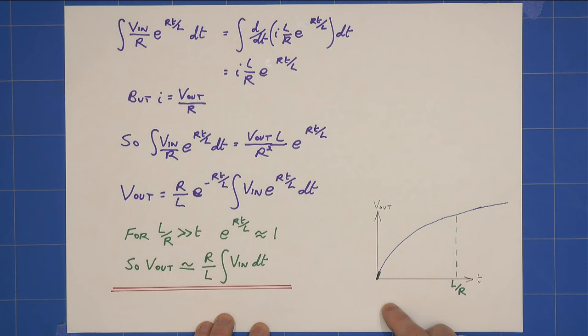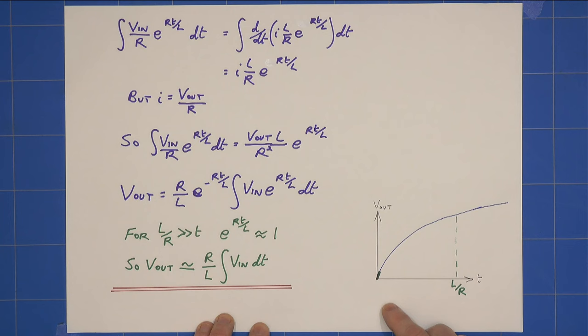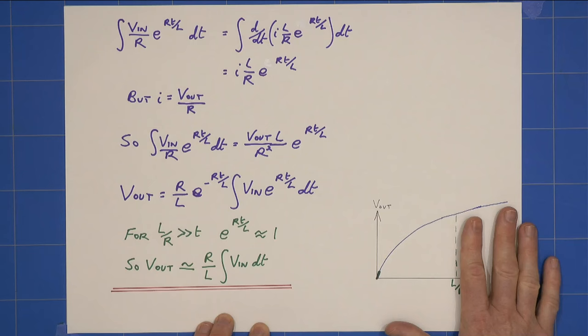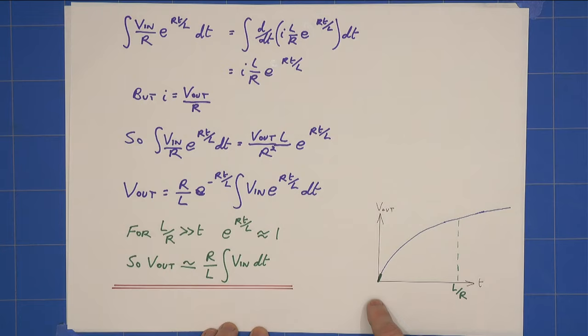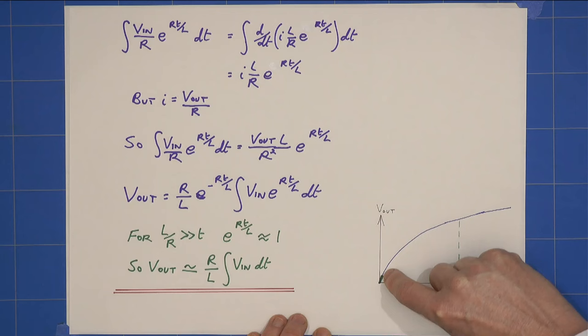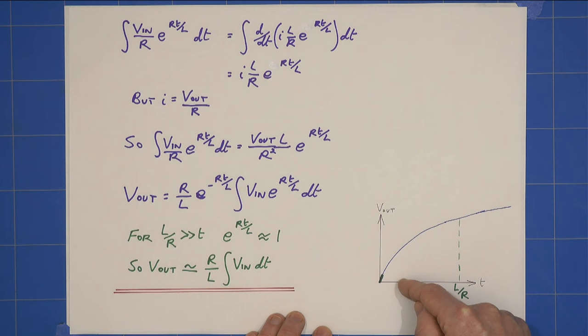Now what does that look like in practice? If I've got v out against time, let's imagine I've got some l over r time constant out here. What it means is, if I've got a varying signal, you know it's moved a little bit, I've got a bit of v out, and then in our case it will be a sawtooth waveform, which I shall come onto in a moment.